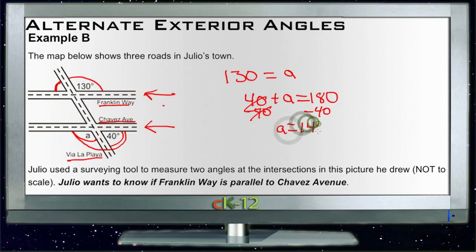So this angle over here must be 140 degrees. And if this angle is 140 degrees and its alternate exterior angle is 130 degrees, then these two lines cannot be parallel. So we say that Franklin is not parallel to Chavez.